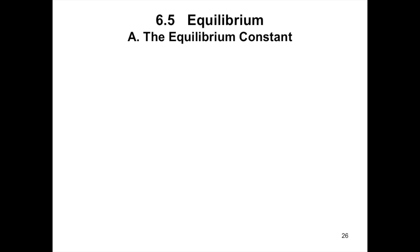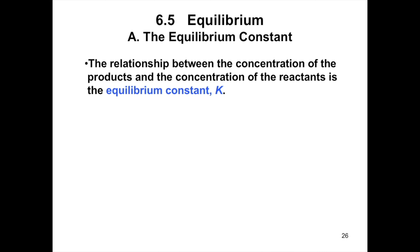We also have what we call the equilibrium constant. Because the net concentrations of the reactants and products do not change at equilibrium, they are used to define an expression which is the equilibrium constant. The relationship between the concentration of the products and the concentration of the reactants is the equilibrium constant K.